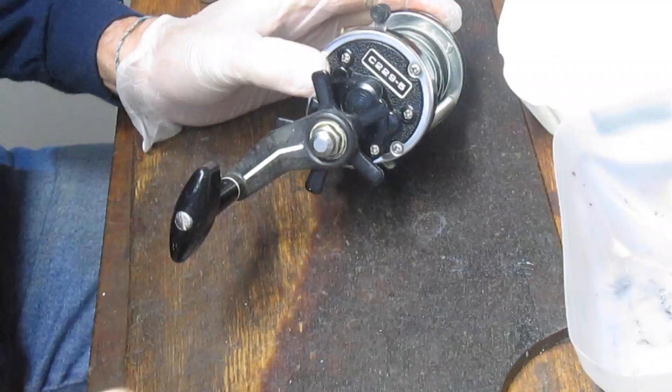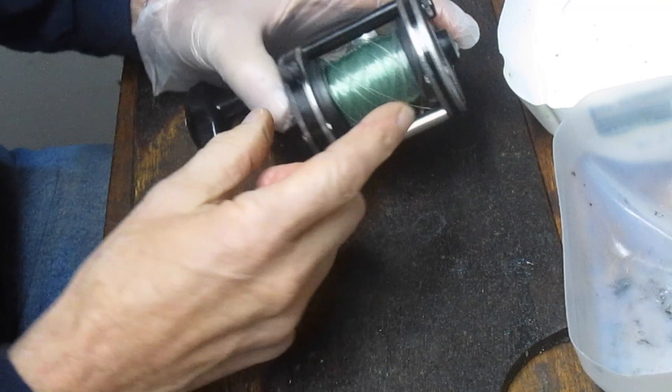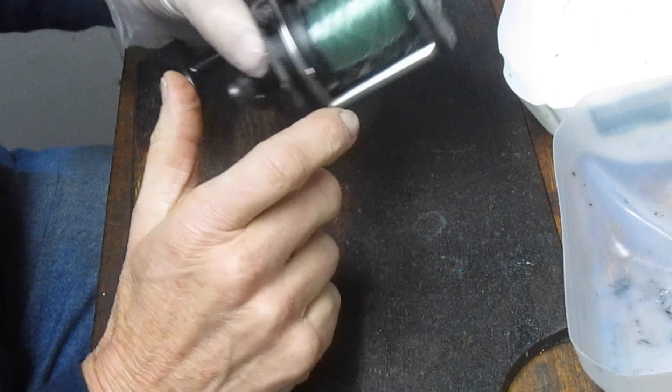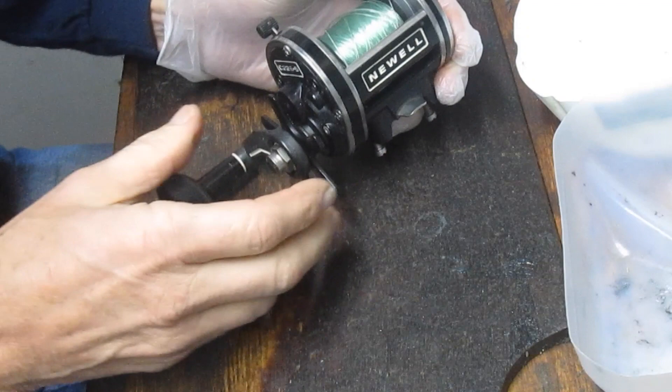This one is the Newell C229-5. If you look closely, you'll notice that the case is about the size of a Squidder. It's a graphite case with an aluminum spool, and inside, as you'll see, is high-quality stainless gearing.